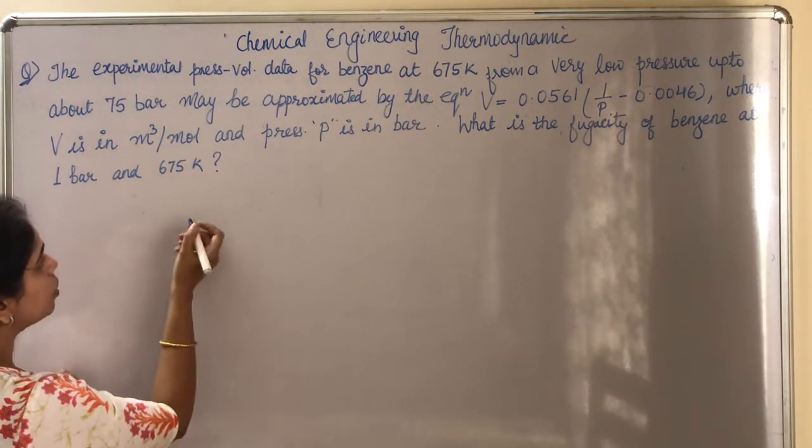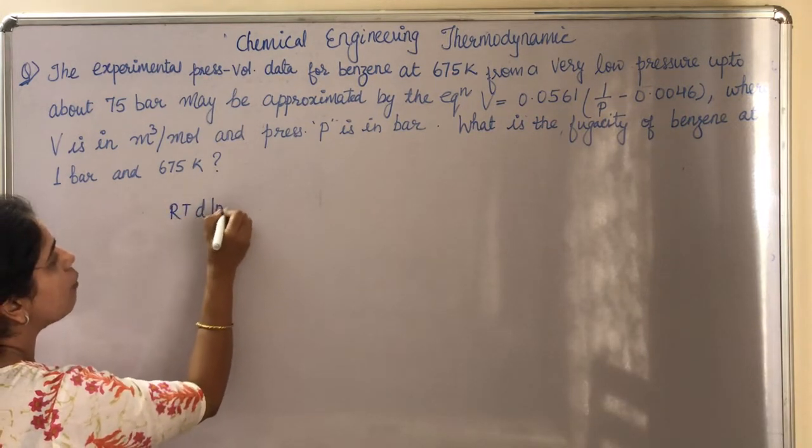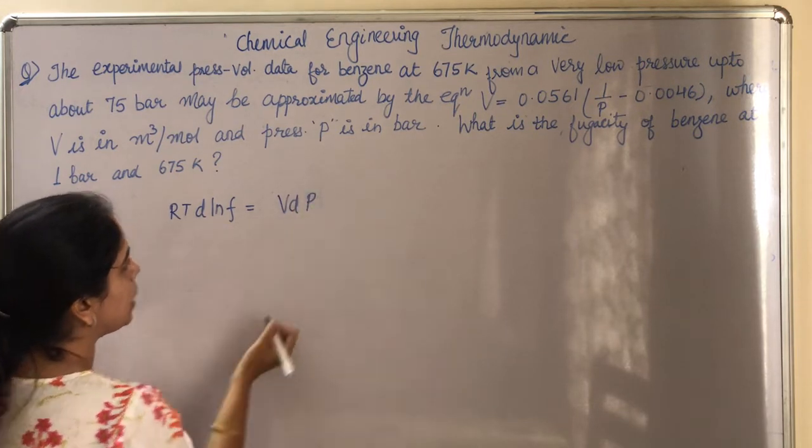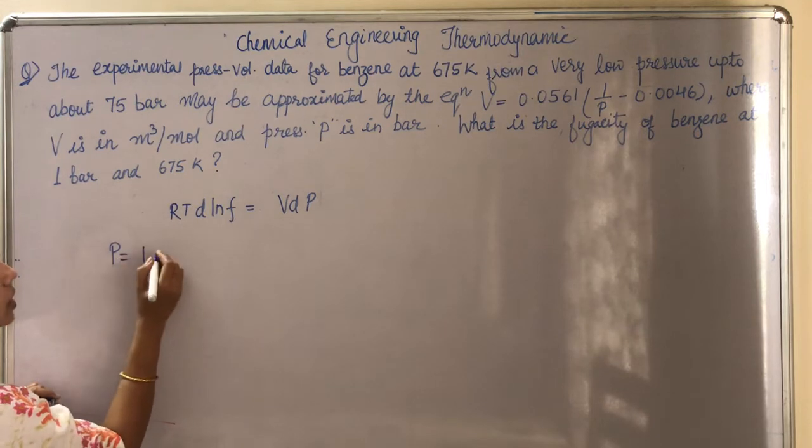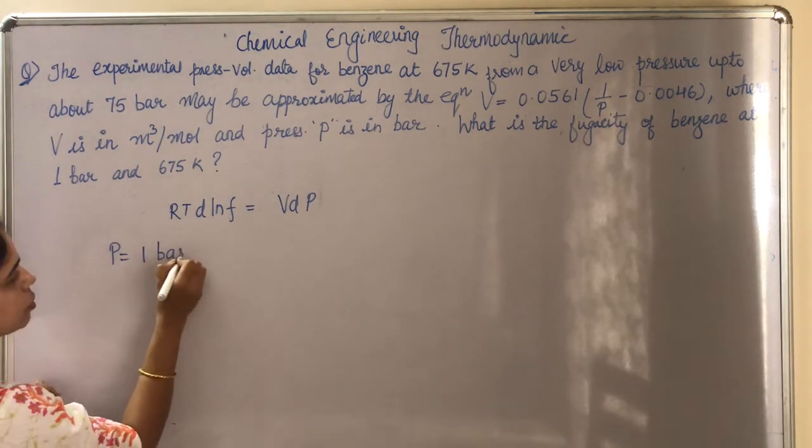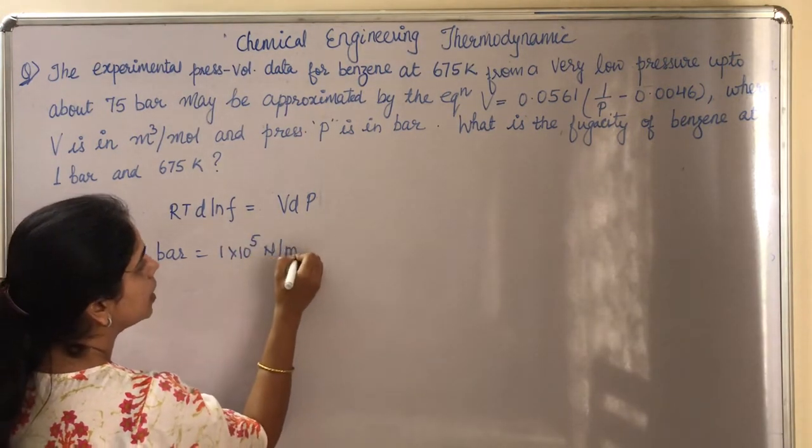Okay, so let's start. We know that RT d ln f = V dP. And we know that P is initially 1 bar, which we need to find out at, so that means it is 1 × 10⁵ N/m².